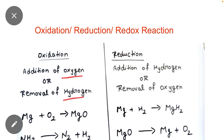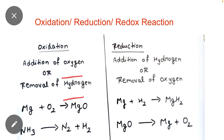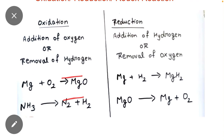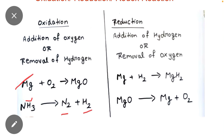For example, when magnesium reacts with oxygen the product is magnesium oxide. Here you can see that oxygen is added to magnesium, so addition of oxygen is called oxidation. Similarly, when ammonia breaks into nitrogen and hydrogen, hydrogen is removed from ammonia — removal of hydrogen is also called oxidation.